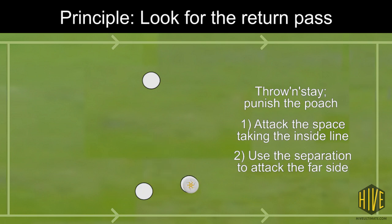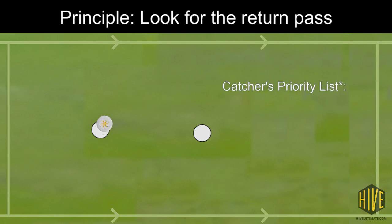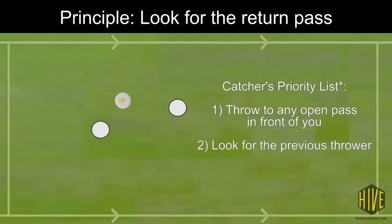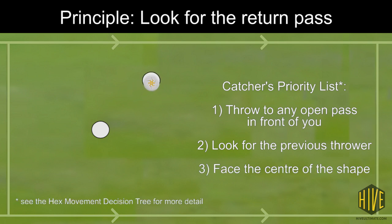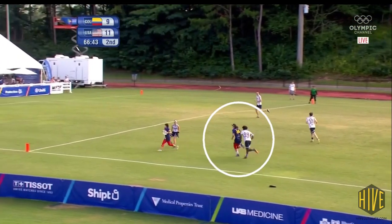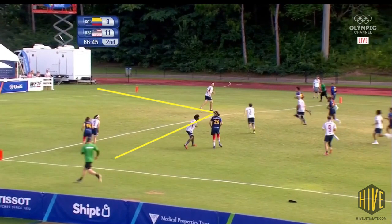The second part of looking for the return pass is with the catcher. The catcher has to have this priority list sorted in their head: number one, throw to any open pass in front of you; number two, look for the previous thrower; and number three, face the centre of the shape. Looking for the previous thrower should happen within one second, regardless of the direction you're facing when you catch the disc. We can actually see Simon do this in this clip, checking in with the previous thrower briefly just to see if they've made a move.